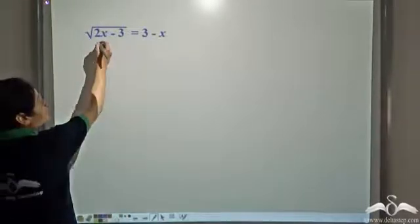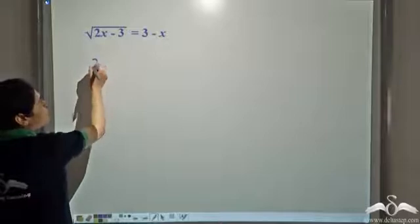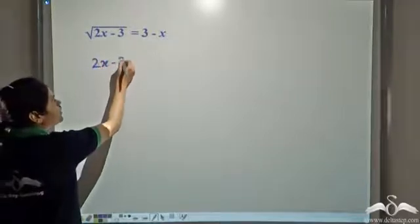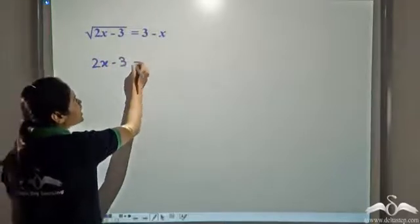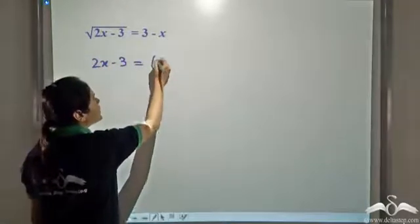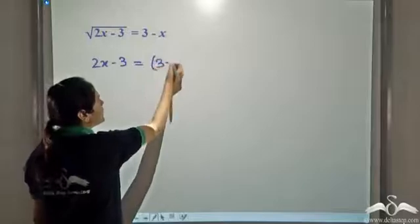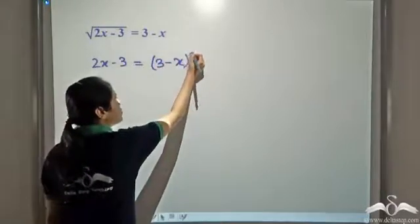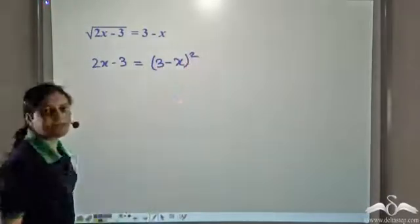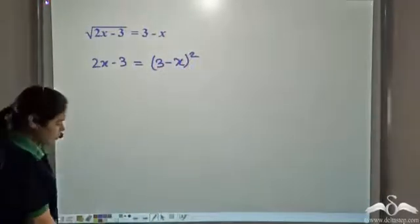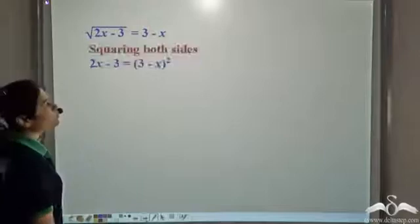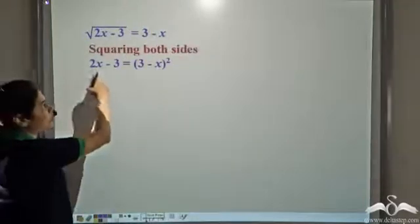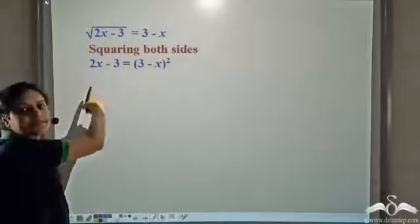Squaring the left hand side, we get 2x minus 3. Squaring the right hand side, we get 3 minus x whole square. So squaring both sides of this equation, we get this.